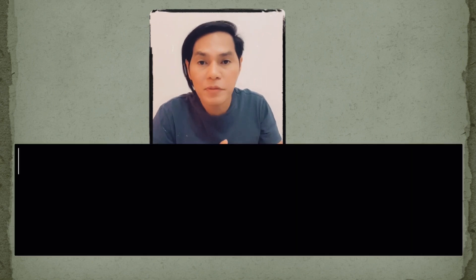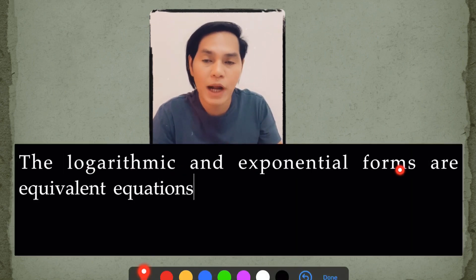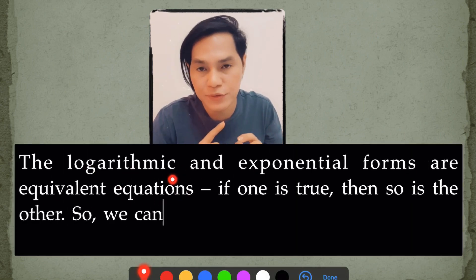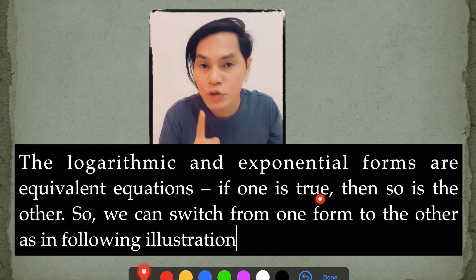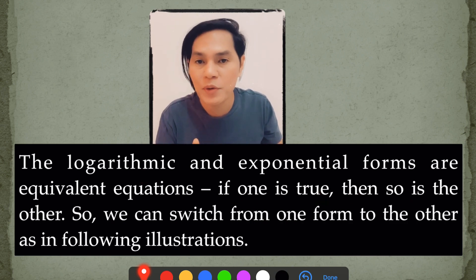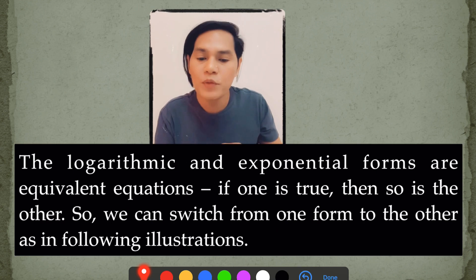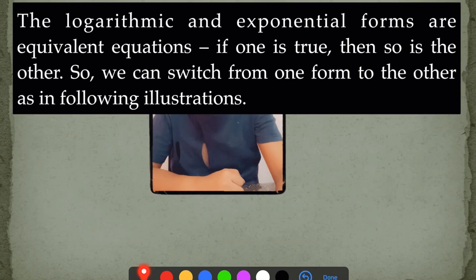Now, listen carefully. The logarithmic and exponential forms are equivalent equations. If one is true, then so is the other. So, we can switch from one form to the other as in following the illustrations.